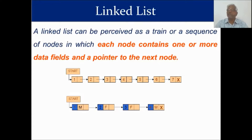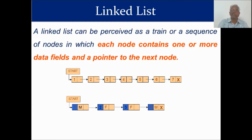A linked list can be perceived as a train or sequence of nodes, in which each node contains one or more data fields and a pointer to the next node. For example, in the first diagram there are seven nodes (1 through 7), and in the second example there are four nodes: 1M, 2F, 3F, 4M.